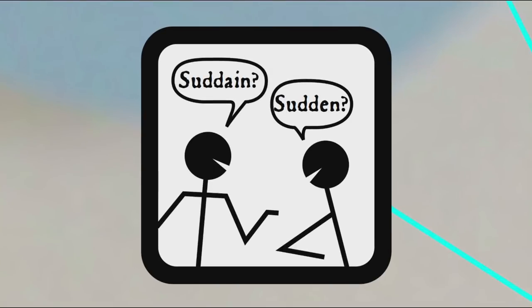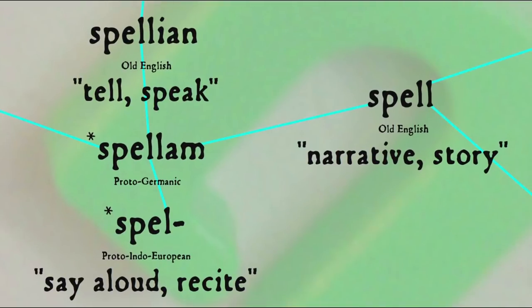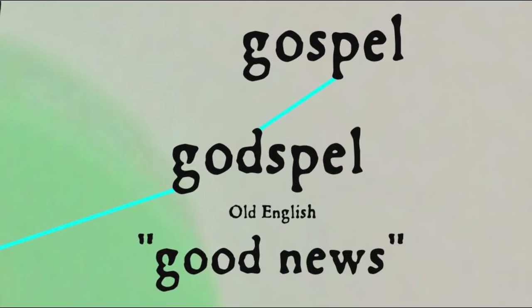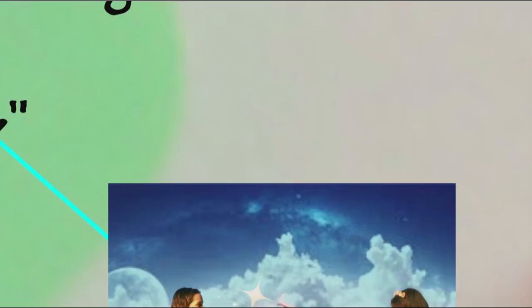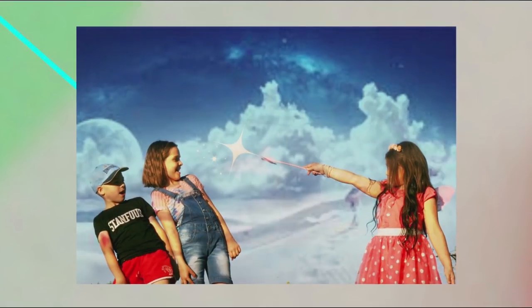The Old English verb spellion, from the Proto-Indo-European root spell meaning 'say aloud' or 'recite,' meant to tell or speak, and the noun spell meant narrative or story, as well as message or news. That sense is clear in the second element of the word gospel, which literally means good news.